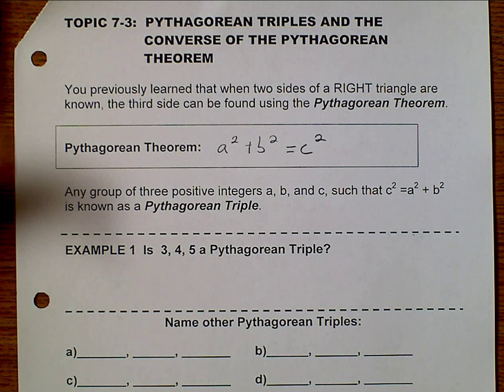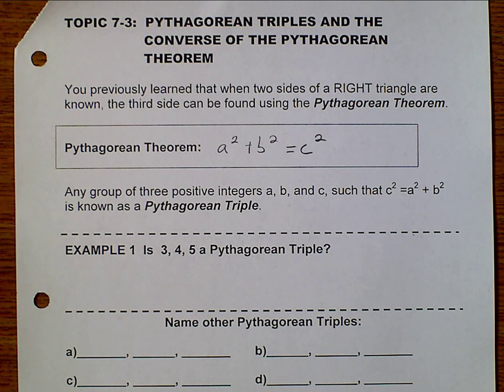And so if we have a right triangle, we can always find that third side using the Pythagorean Theorem. However, sometimes we have what are called Pythagorean Triples. That's when a, b, and c are all integers.